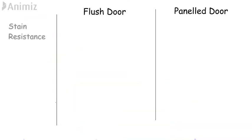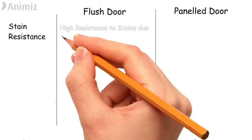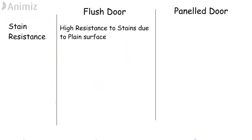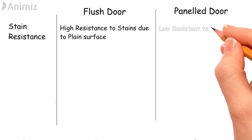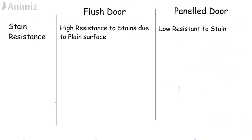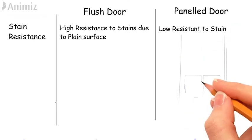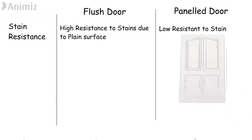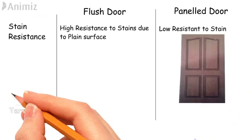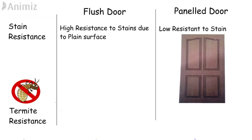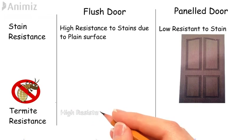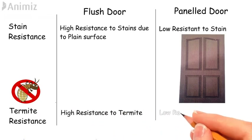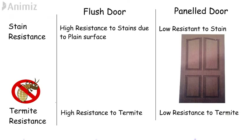Stain resistance: Flush door has high resistance to stains as it has a plain surface on both sides, whereas panel doors have less resistance to stains as they have grooves in which dust gets accumulated. Termite resistance: Flush door has high resistance against termites, whereas panel doors have less resistance to termites as they are made up of natural wood.